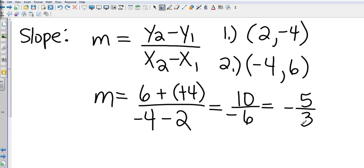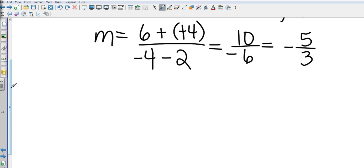I'm going to reduce this to negative 5 over 3. Now they're going to ask you, is this slope rising? Is it falling? Is it vertical or is it horizontal? In this case, because it's negative, that makes it a falling slope.